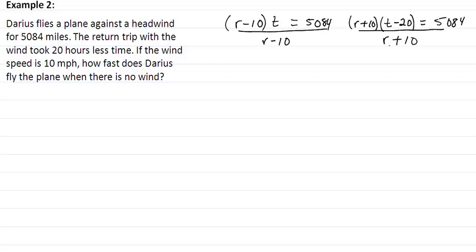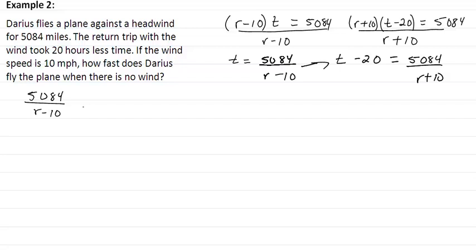Again note that r minus 10 and r plus 10, if we multiply them out, is a difference of squares. So we get t equal to 5,084 over r minus 10, and we get t minus 20 equal to 5,084 over r plus 10. We're going to substitute this in for our t. That means we're going to get 5,084 over r minus 10 minus 20 equal to 5,084 over r plus 10.